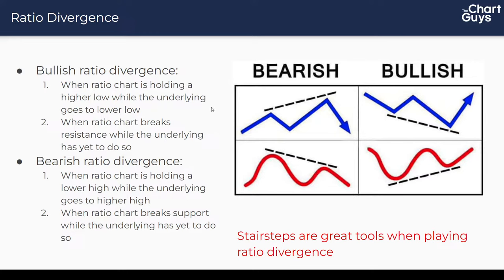Another version of bullish divergence is when the ratio chart breaks resistance while the underlying has yet to do so. That tells you the ratio chart is confirming its trend change or breaking resistance, front-running the underlying ticker, and that can lead you to anticipate the underlying will follow. Bearish ratio divergence is just the opposite — when the ratio chart holds a lower high while the underlying goes to a higher high, or when the ratio chart breaks support while the underlying has yet to do so.